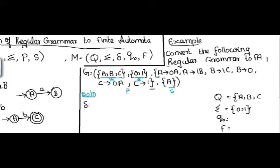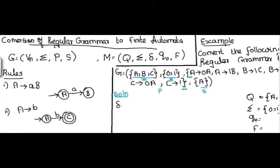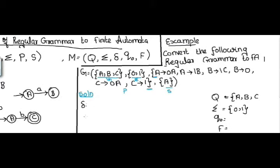Now I start constructing the transition function using the productions and the rules. For production A tends to aB: A is the present state, small letter is the input, and capital letter is the next state. So: state A with input 0 gives next state A; and state A with input 1 gives next state B.